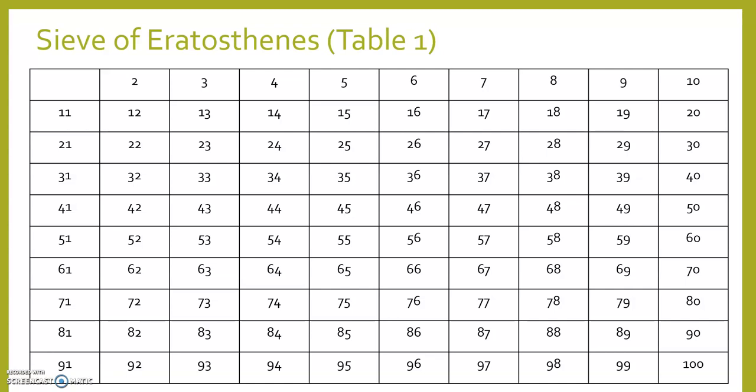Starting with the number 2. 2 is prime. Its only factors are 1 and 2. We're going to cross off the even numbers because they all have factors of 2, so they are not prime. Looking at 3. 3 is prime. Its only factors are 1 and itself. So we're going to cross out our multiples of 3 that are not crossed off yet.